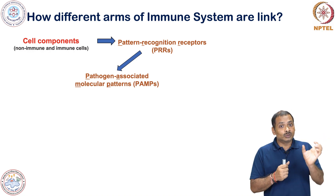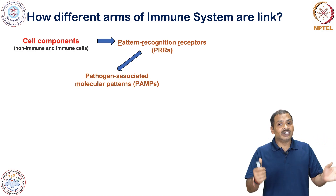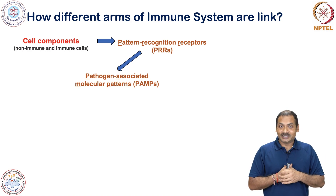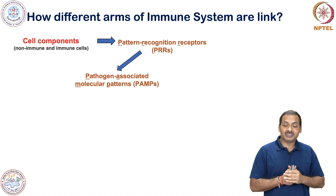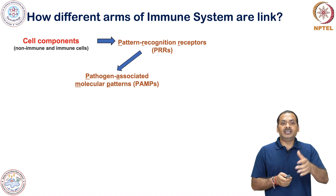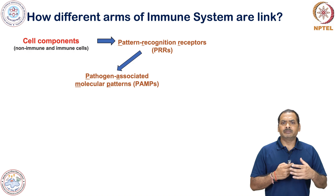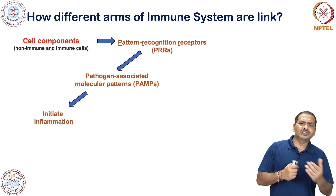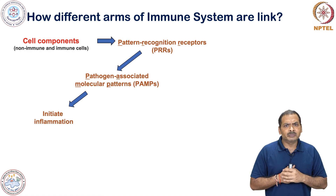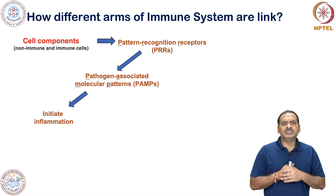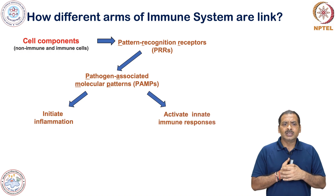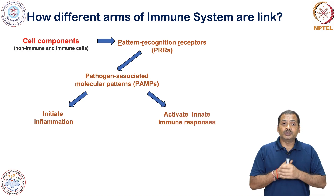All living entities have nucleic acids, but all these nucleic acids are quite different. Pattern recognition receptors can discriminate between different kinds of nucleic acid. When PRRs sense pathogen-associated molecular patterns, they induce and activate the production of inflammation, which is important for the recruitment of other immune cells. This can also activate innate immune responses.